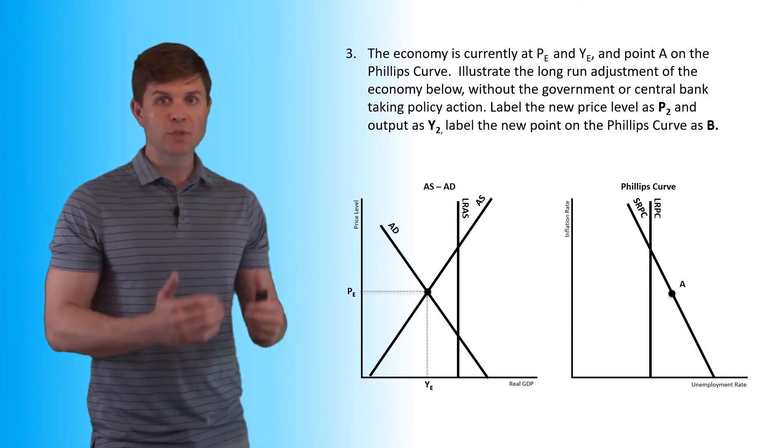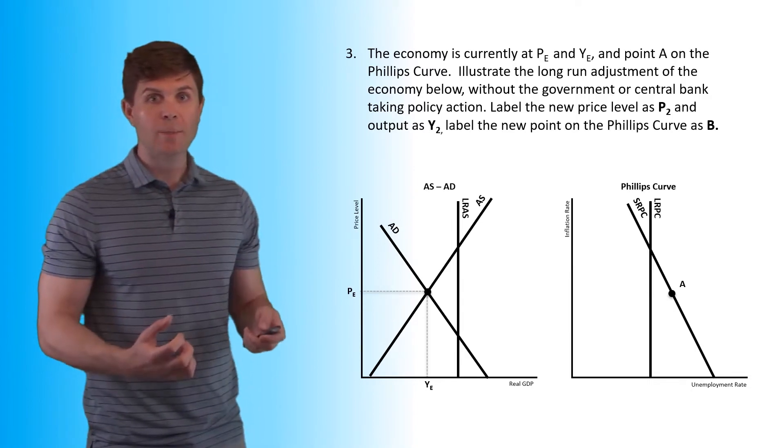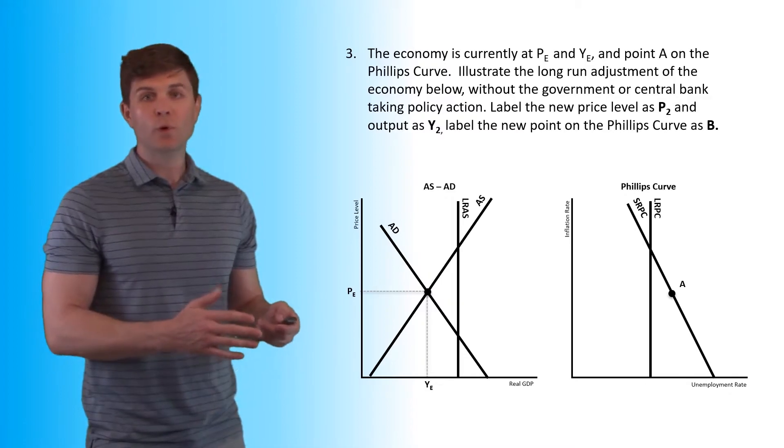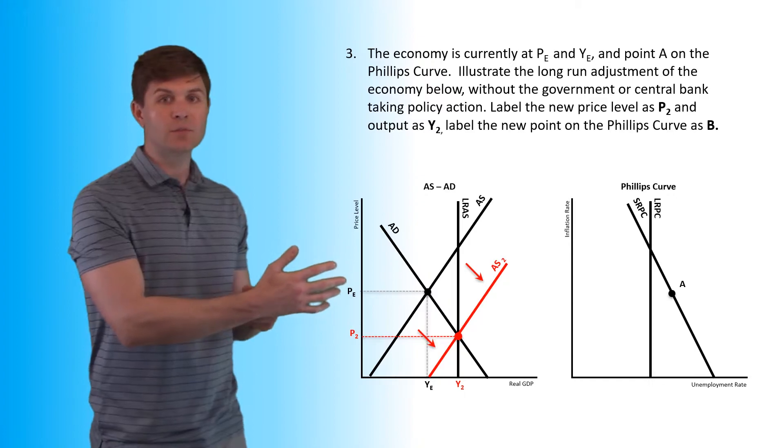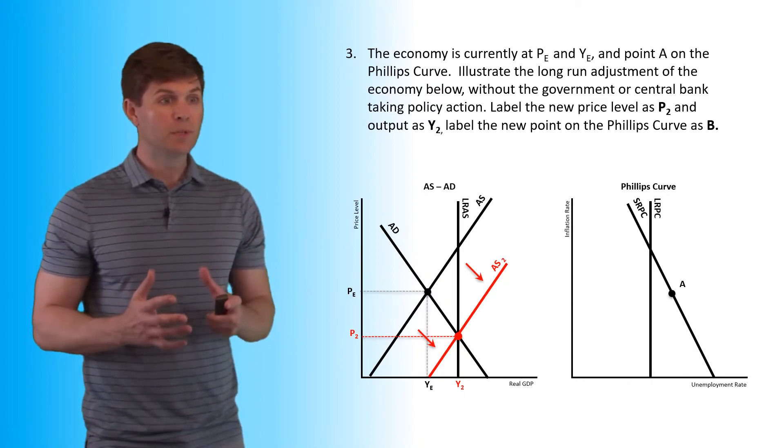We know that prices will eventually drop. We know that wages are going to drop. As those wages drop, we're going to see AS shift back to the right. So we're going to have a right-shifting AS curve. We're going to get back to potential GDP.